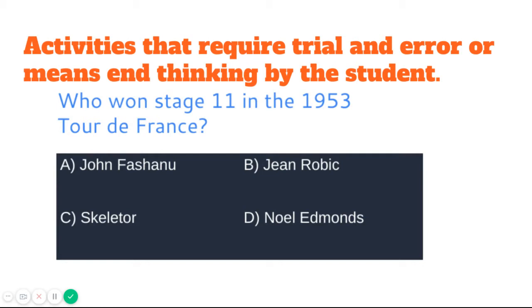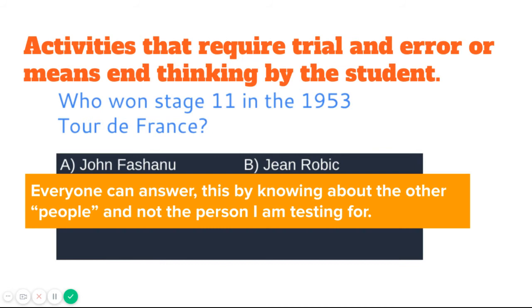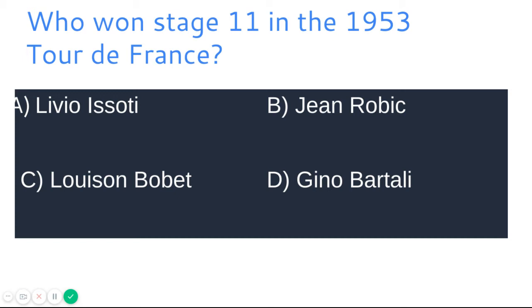Here's a similar idea and a question for us all: who won stage 11 in the 1953 Tour de France? Was it John Fashanu, Jean Rubic, Skeletor, or Noel Edmonds? We can all work that out — if we know a little about John Fashanu, Skeletor, and Noel Edmonds, we don't need to know anything about Jean Rubic, so we can answer through inference or deduction. This is very easily corrected, but when lessons are flowing we may not think in that kind of detail and a student may get an answer right without actually understanding it.